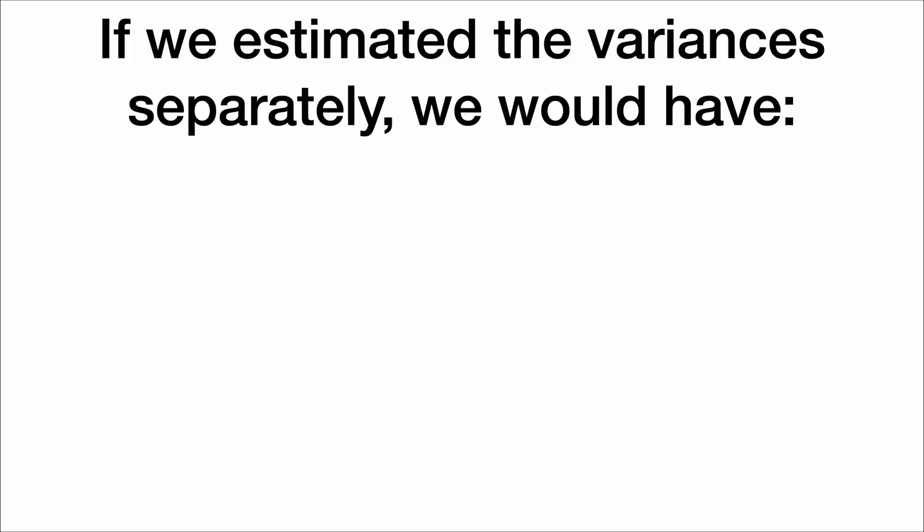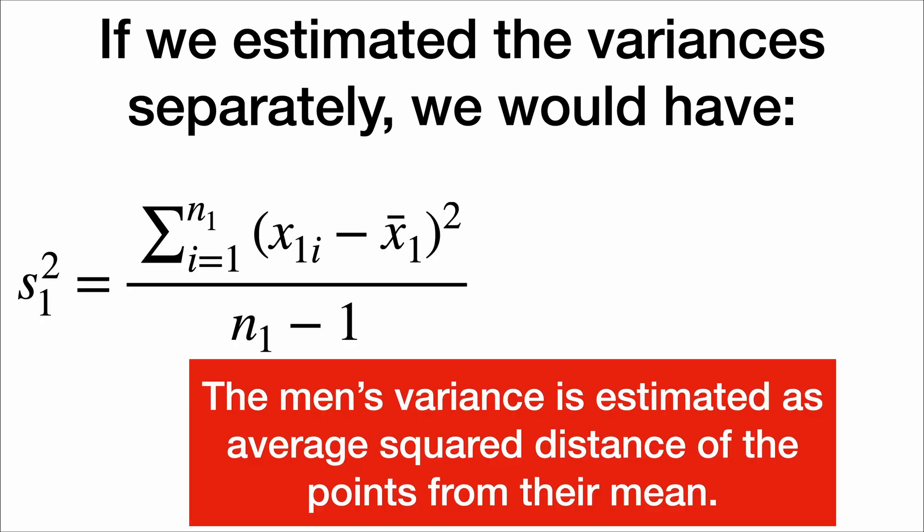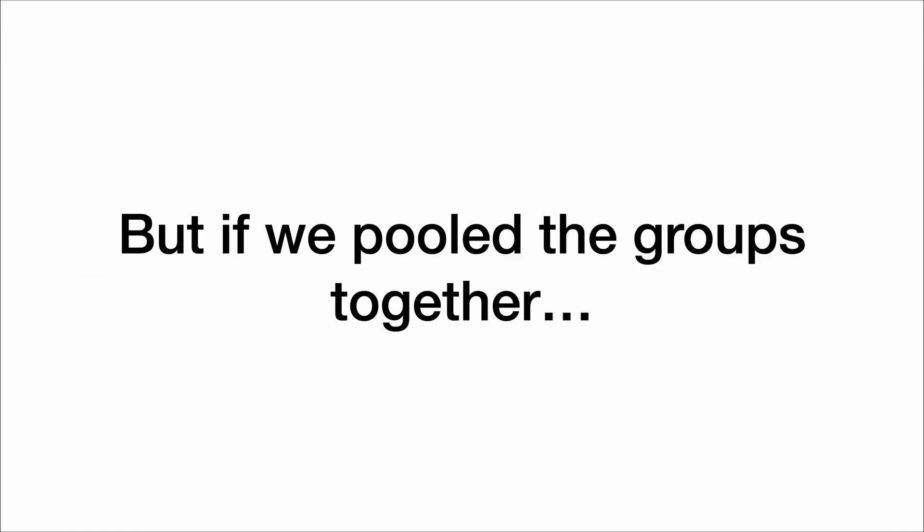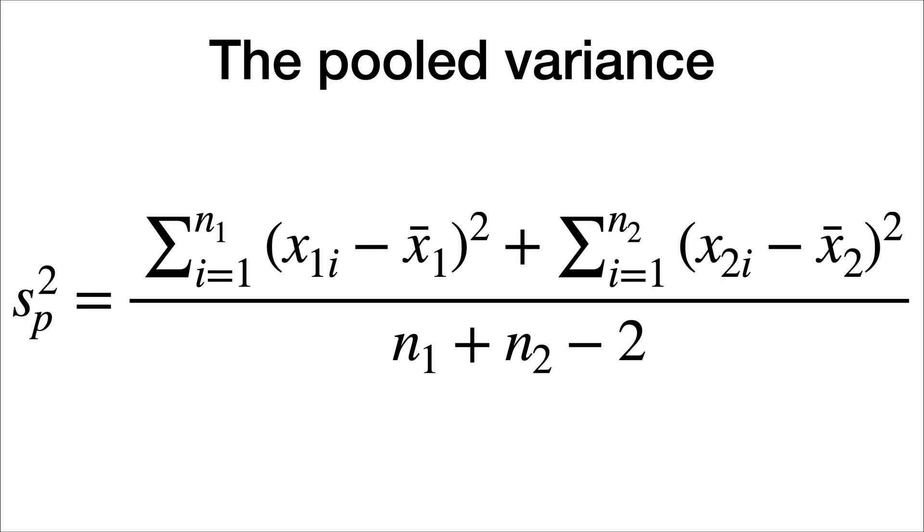If we estimate the variances separately, we would have the formulas like this. The men's variance is estimated as the average squared distance of the points from their mean. The women's variance is estimated as the average squared distance of the points from their mean. But if we pooled the groups together, then we could compute the pooled variance.